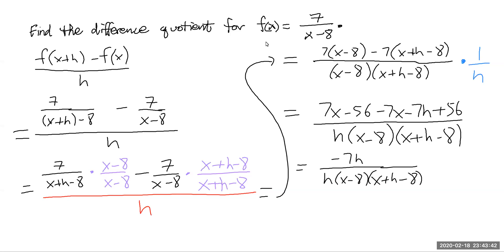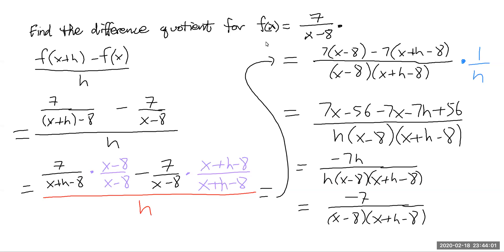Notice the h's are factors, so they can reduce. And we're left with negative 7 over x minus 8 times x plus h minus 8. And there you go — you've got the difference quotient for f of x.